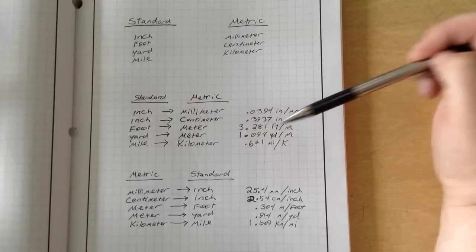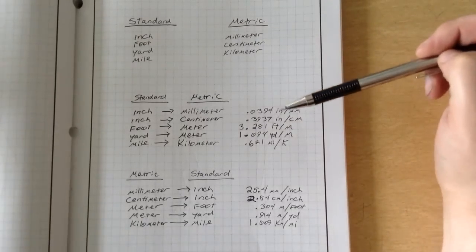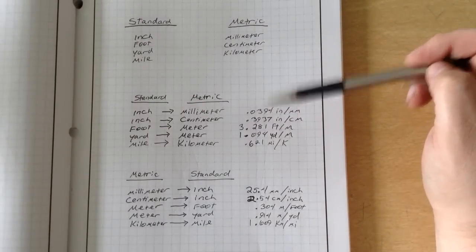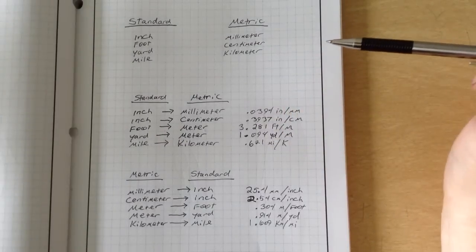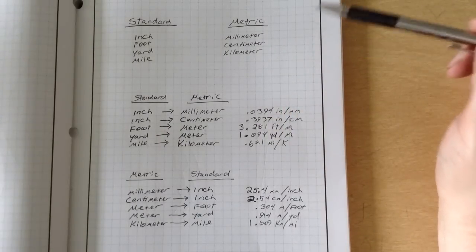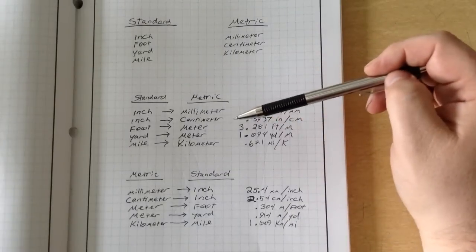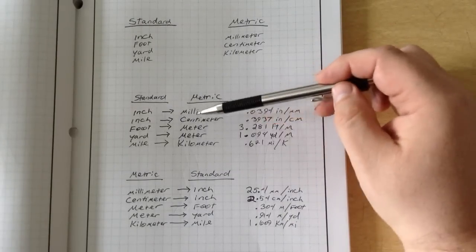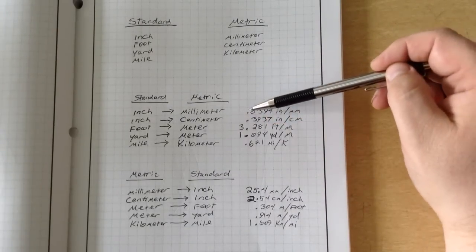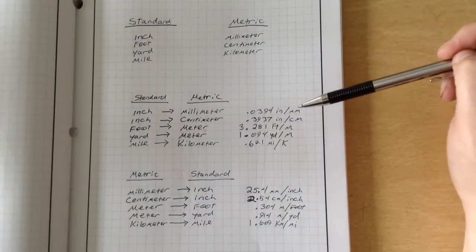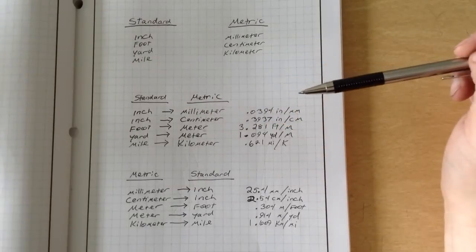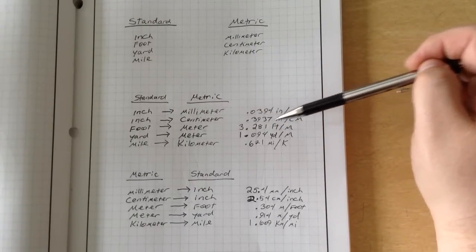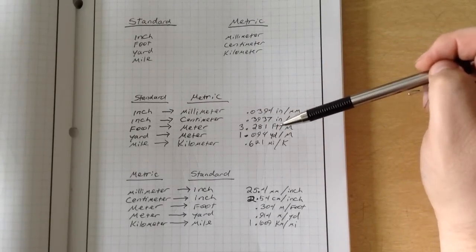So this right here are some equivalencies or conversions. I would highly recommend you write down this entire piece in your engineering notebook. When we look at this, when we convert things, if you want to go an inch to a millimeter, you need to know that there's 0.0394 inches in every millimeter. If you're going inch to centimeter, you need to know that there's 0.3937 inches per centimeter.